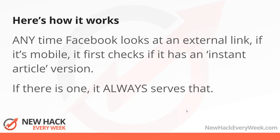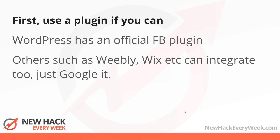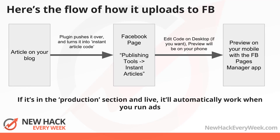If there is one, it'll always serve that — once again, only on mobile. First, use a plugin if you can. WordPress has an official Facebook plugin for this. Others such as Weebly, Wix and all that kind of stuff, you can integrate it as well — just Google that. This is a really easy way to do it, because each time you post content on your blog it will automatically turn it into an instant article and upload it to Facebook. It's that easy.